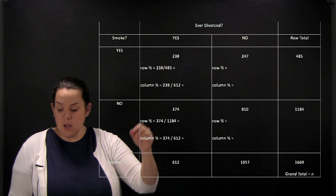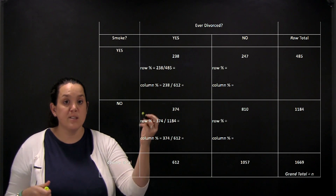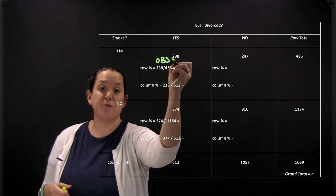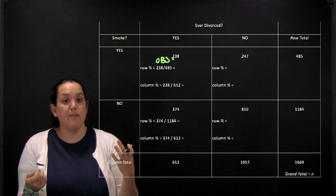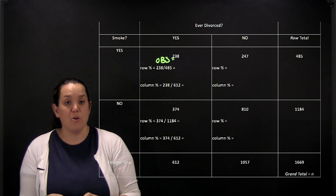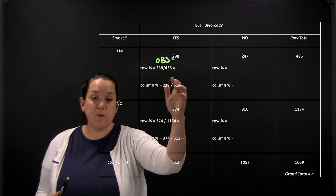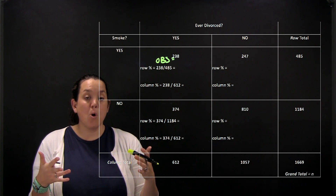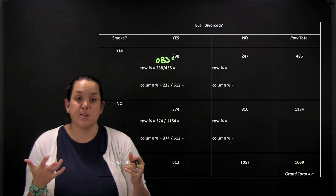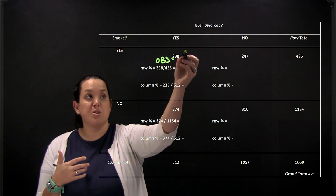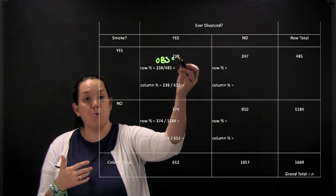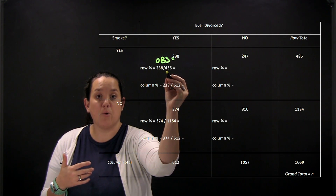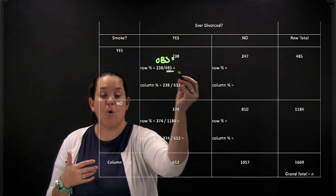Within each cell, you have different counts that are represented. The counts shown here are called observed counts. Within each cell, you can also calculate a row or column percent. Row percents are based on the total number of observations in the row, so you take the observed count — which is always your numerator — and divide by the corresponding row or column total.